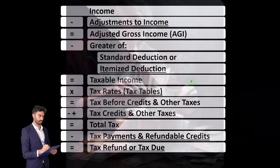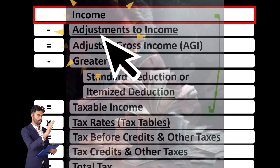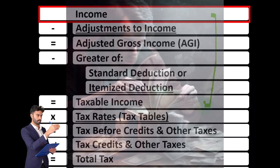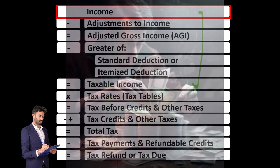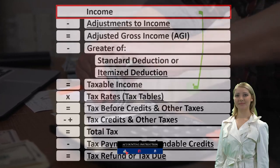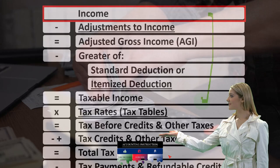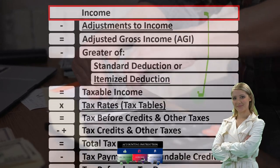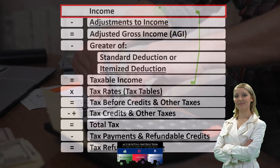Looking at the income tax formula, we're focused on line one income. The first half of the income tax formula is in essence an income statement — although an outline, a scaffolding, with other forms and schedules flowing into these line items. The Schedule C is one of them for business income, being in essence an income statement with business income minus business expenses. The net income then rolls in from Schedule C to line one income of our income tax formula.